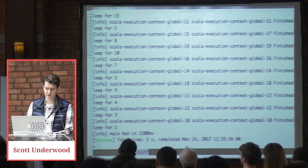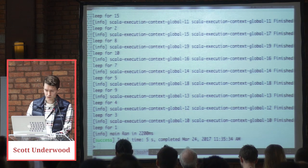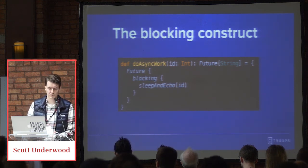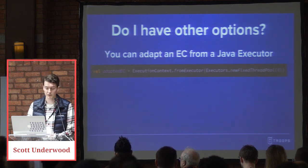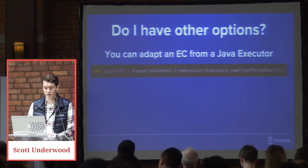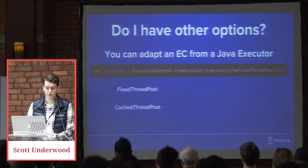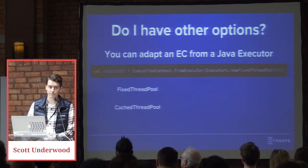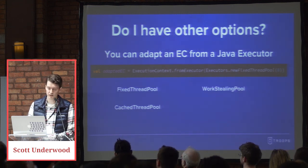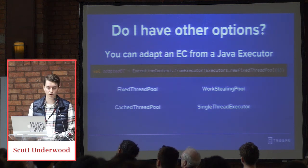Maybe you don't want to use this execution context at all. You can easily adapt an execution context from a Java executor, which opens up tons of implementations. For example: a fixed thread pool with a fixed number of threads and unbounded queue; a cached thread pool for keeping threads alive; a work-stealing thread pool with similar semantics to the global execution context; and a single-threaded executor — essentially a fixed thread pool of one that can't be modified later.